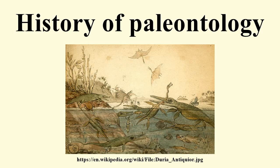Hooke believed that fossils provided evidence about the history of life on Earth, writing in 1668: 'If the finding of coins, medals, urns, and other monuments of famous persons, or towns, or utensils, be admitted for unquestionable proofs that such persons or things have in former times had a being, certainly those petrified bodies may be allowed to be of equal validity and evidence that there have formerly been such vegetables or animals, and are true universal characters legible to all rational men.' Hooke was prepared to accept the possibility that some such fossils represented species that had become extinct, possibly in past geological catastrophes.